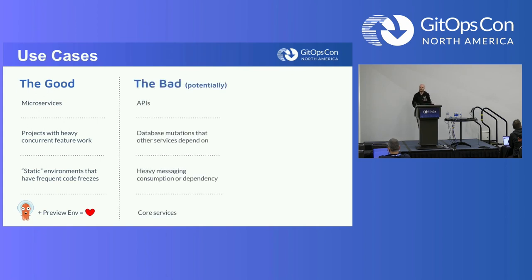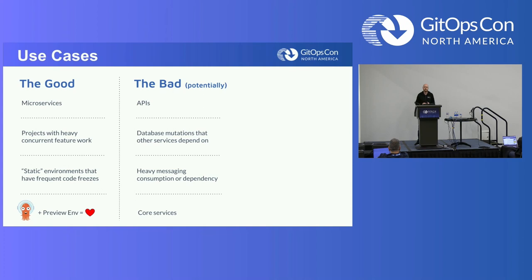Now for the potentially bad. APIs can seem like an obvious use case — you think you can get out there and easily test in a preview environment. But depending on how much dependency you have on other services, or how you set up ingress routes, this can be a bit of a trap. API testing can lead to very unexpected results, and you're likely going to have to build out preview environments with multiple services. It can actually be a very good use case, but you need to watch out for the caveats.